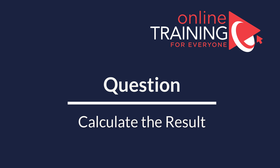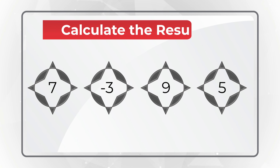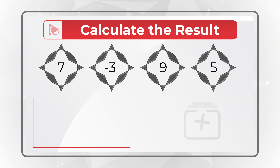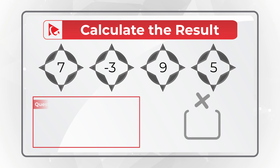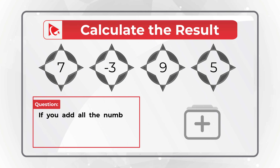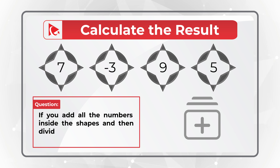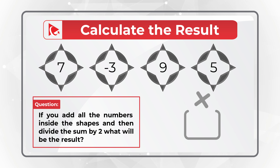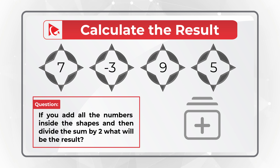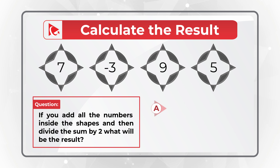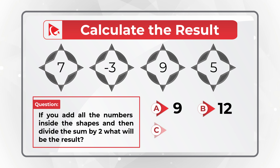Here's an amazing question to test your business math skills. You're presented with a set of numbers in a compass-like figure. You need to add up all the numbers inside the shapes and then divide the sum by two. You have four different choices: Choice A: 9, Choice B: 12, Choice C: 18, and Choice D: 24.